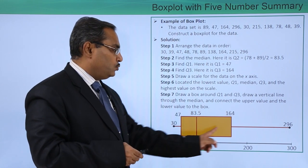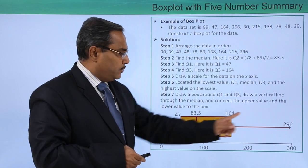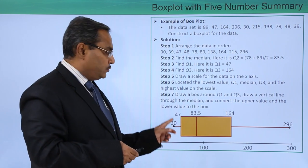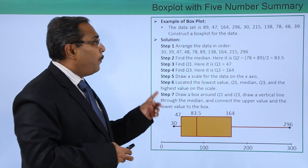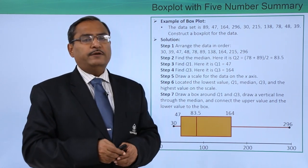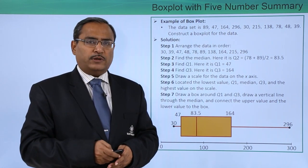So Q1, Q2, Q3, the highest value, the lowest value. In this way we have shown you how this box plot can be done using 5 numbers. Thanks for watching this video.